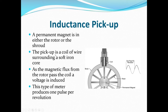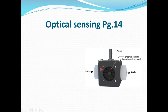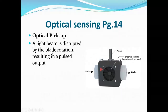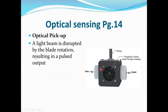The last detector type is optical sensing. Flow comes through and the rotor blade spins. A light beam is disrupted by the blade rotation, resulting in a pulsed output — similar to a strobe light effect.